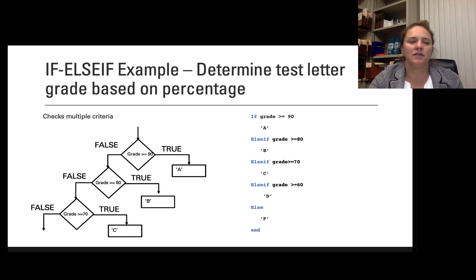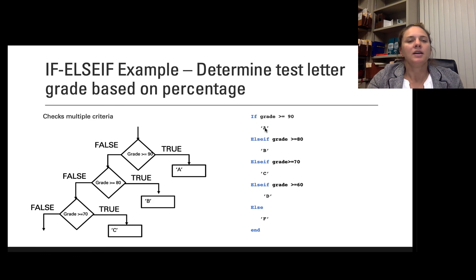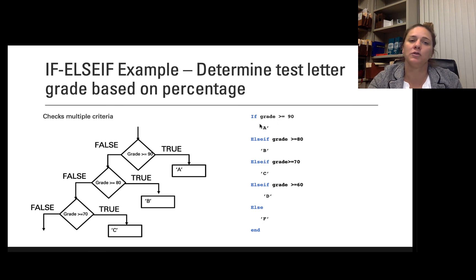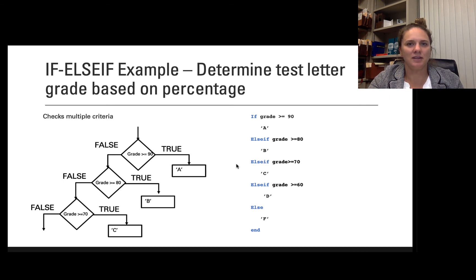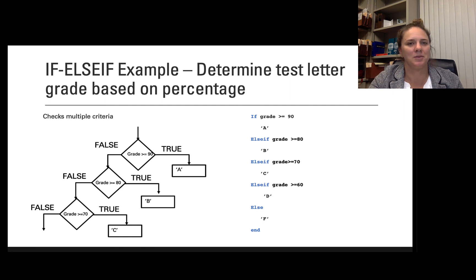Here you can really see that the if-elseif finds the very first true statement and executes that. If my grade is greater than or equal to 90 and I get an A, the rest is skipped. It's never going to ask if grade is greater than or equal to 80 — that is also true, but it goes to that very first true statement. So the correct answer for a 92 would be A. You really have to be careful about the order in which you list these statements. That's all for today about selection statements — next we'll talk about iteration techniques and what those look like in flowcharts and written algorithms.